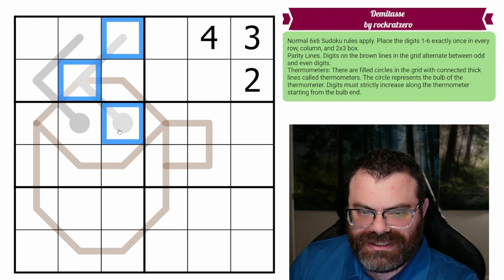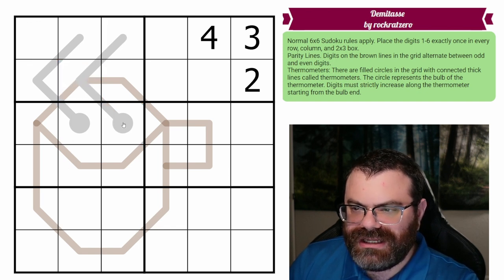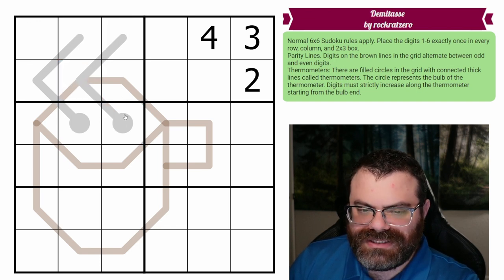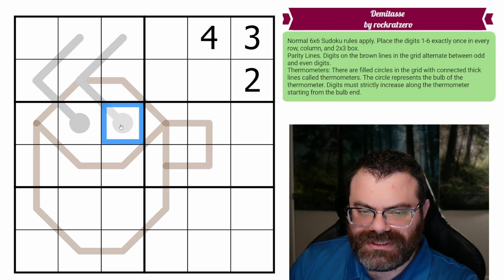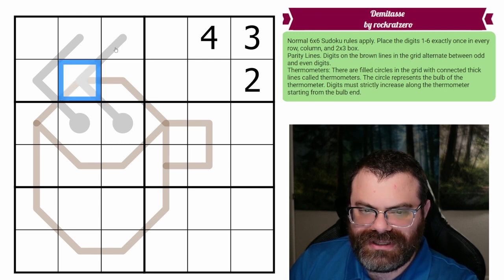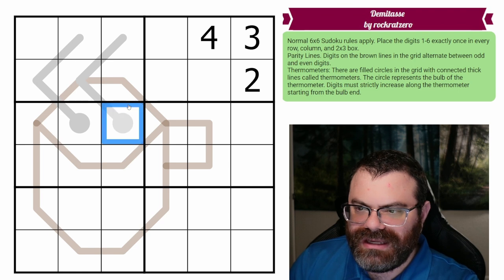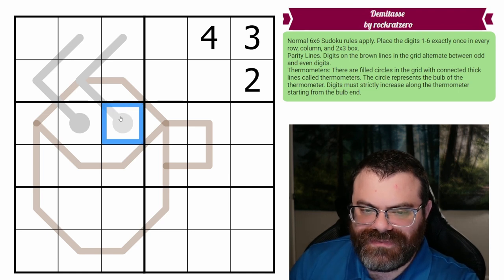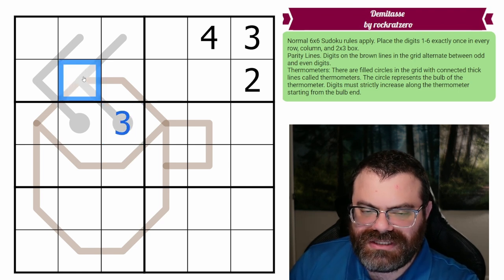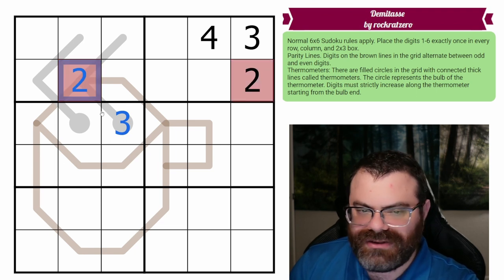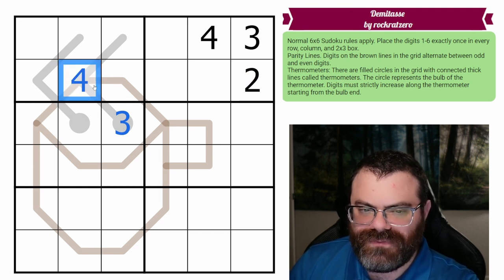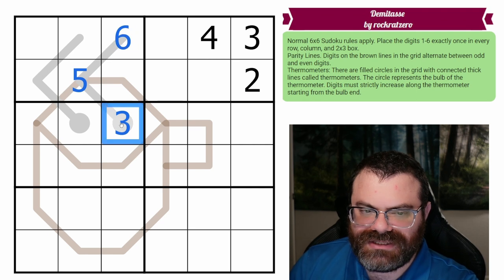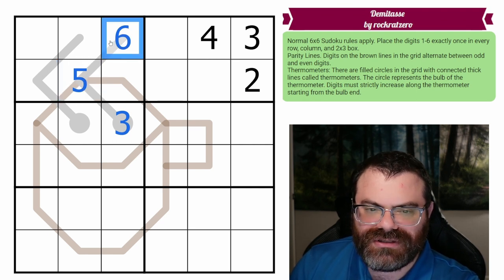We also have thermometers in the grid. We have a bulb of the thermometer, which is the circle here, and then a line coming out to continue it. Digits have to strictly increase from the bulb. So if this was a 3, this needs to be strictly bigger than 3. It can't repeat the 3, can't go to 2 or 1. It has to be a 4 or larger. So we could go 5, 6 like this. As we move along, we get strictly larger.